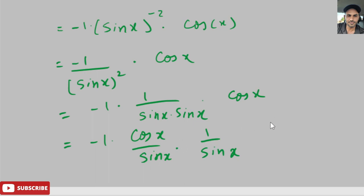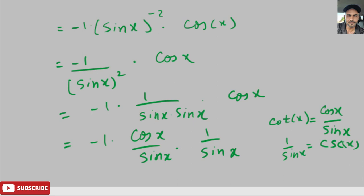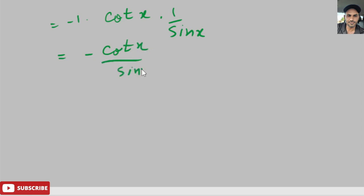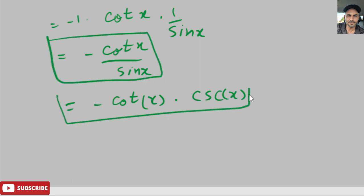We recognize that cosine x over sine x equals cotangent x, and 1 over sine x equals cosecant x. Plugging these in, we can write the result as negative cotangent x times 1 over sine x, which equals negative cotangent x over sine x, or equivalently, negative cotangent x times cosecant x. Either form is a valid final answer for the derivative of cosecant x.